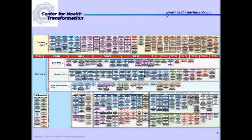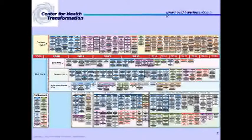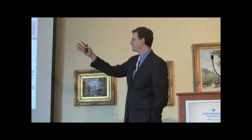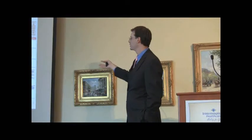This is a timeline. It doesn't do justice on screen because we actually printed it off and it's 10 feet wide by 5 feet high. There are about 500 color-coded boxes — by taxes, Medicare, Medicaid, reimbursement cuts, or whatever they may be. It tells you the section of the law, a brief title, and a one or two sentence explanation of the provision. It runs from 2010 until 2020.